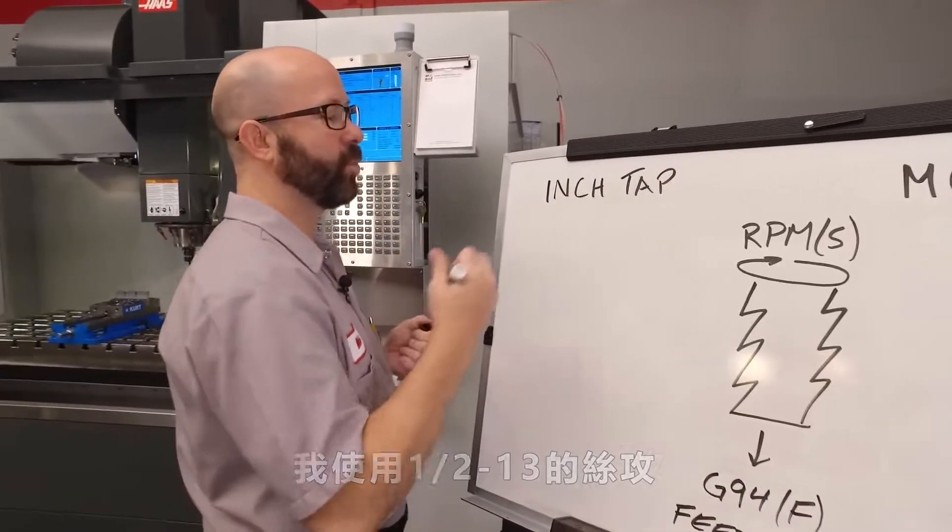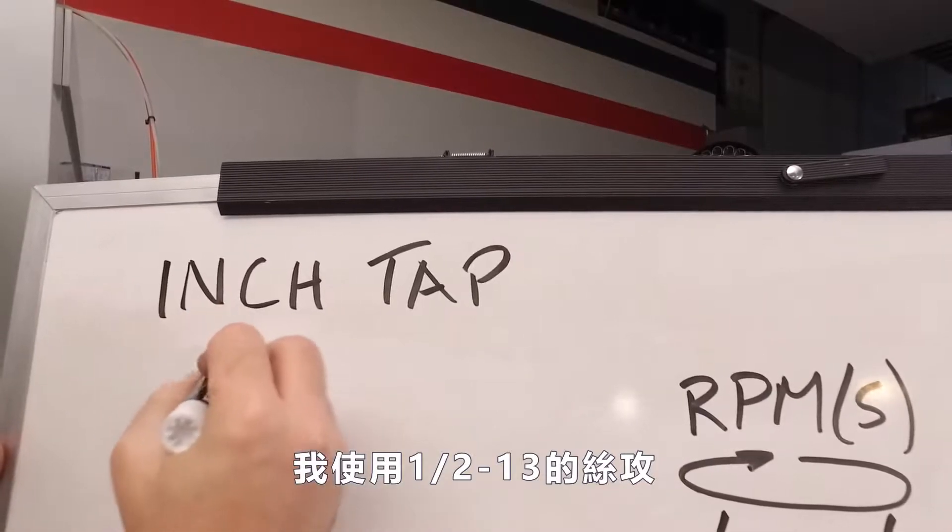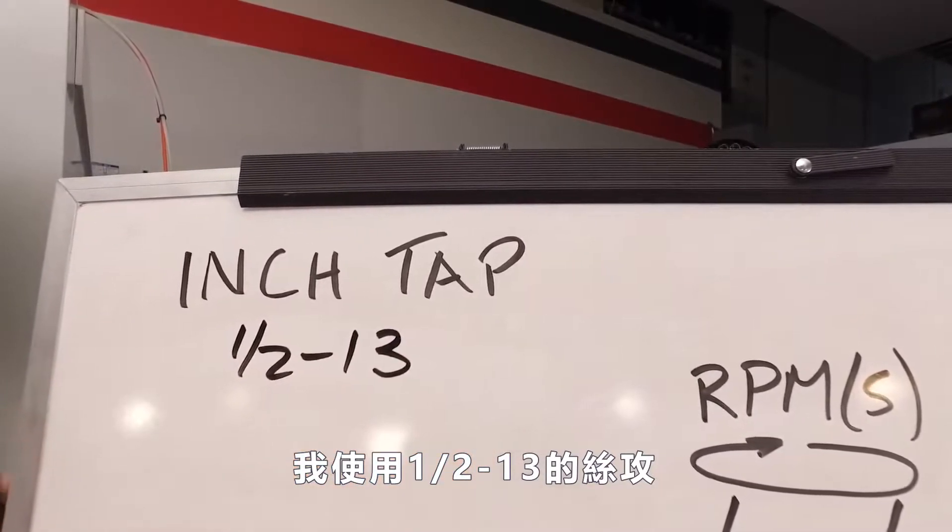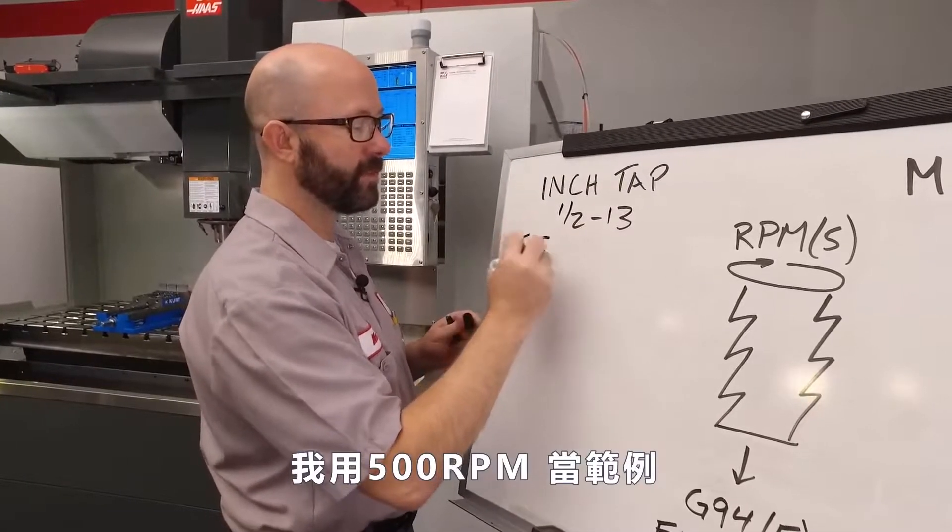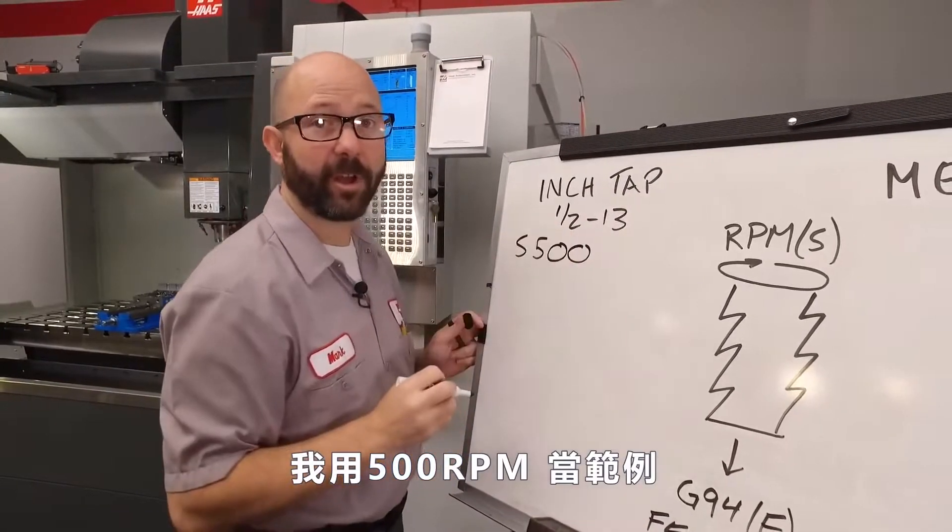Now for this example, we're going to use a half 13 cutting tap. The first piece in our puzzle is our RPM. We're going to go with 500 RPM for this example.